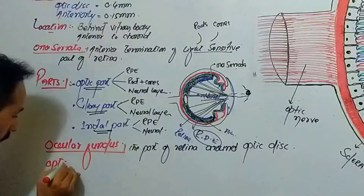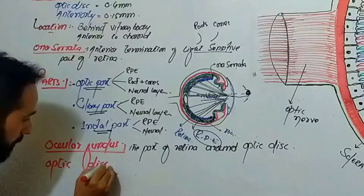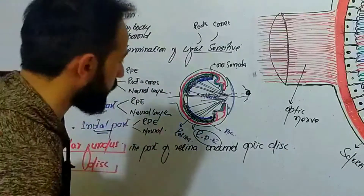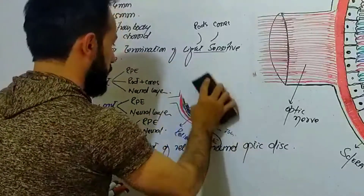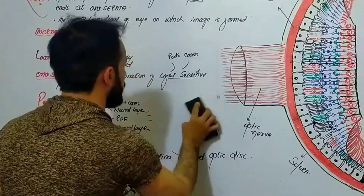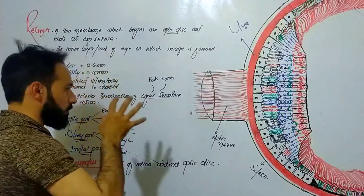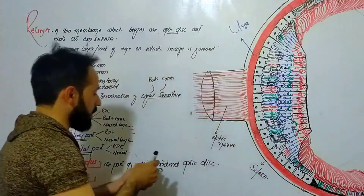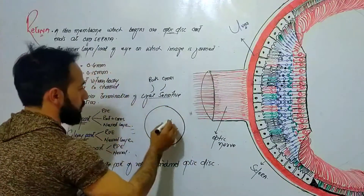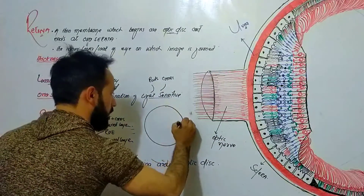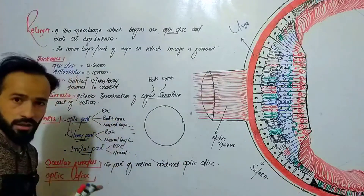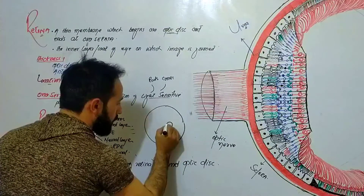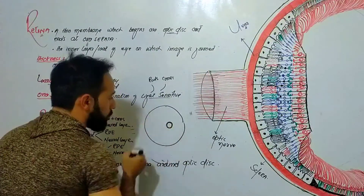The next important thing about the retina is the optic disc. Looking at the retina from the anterior side, you will see a small depression. Through this depression, looking from the anterior side at the retina, here you will see a small depression.